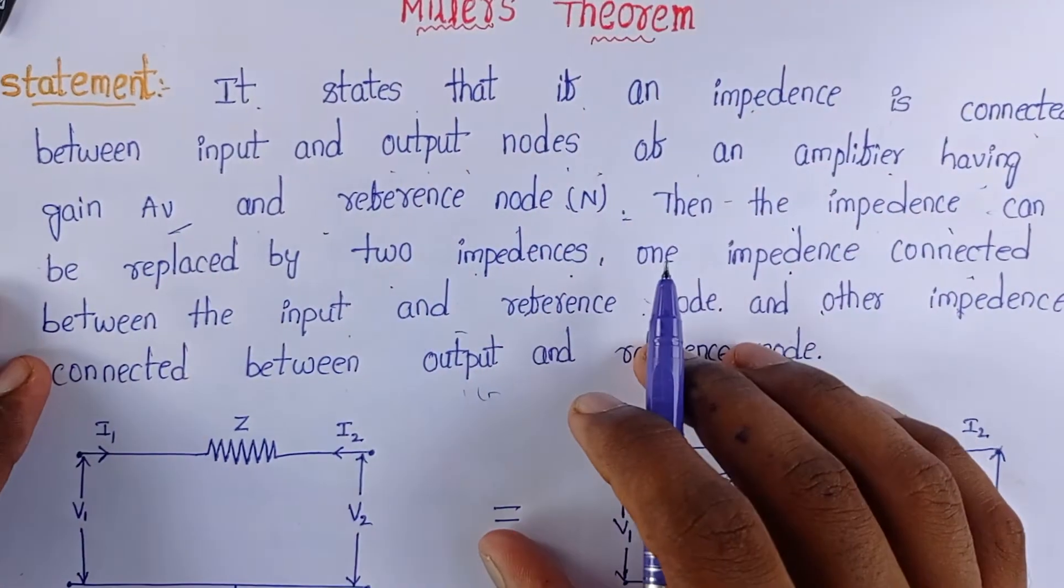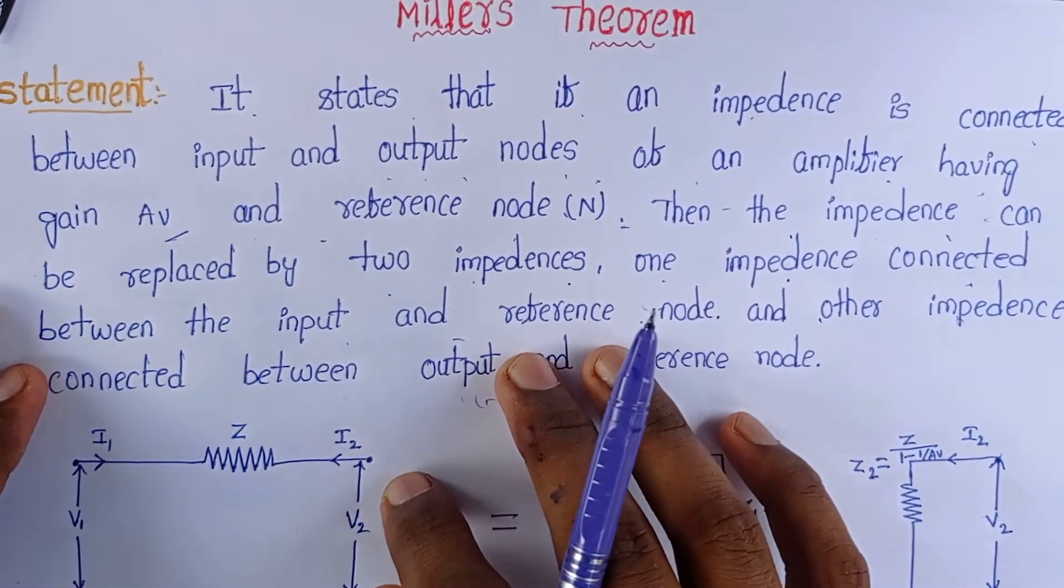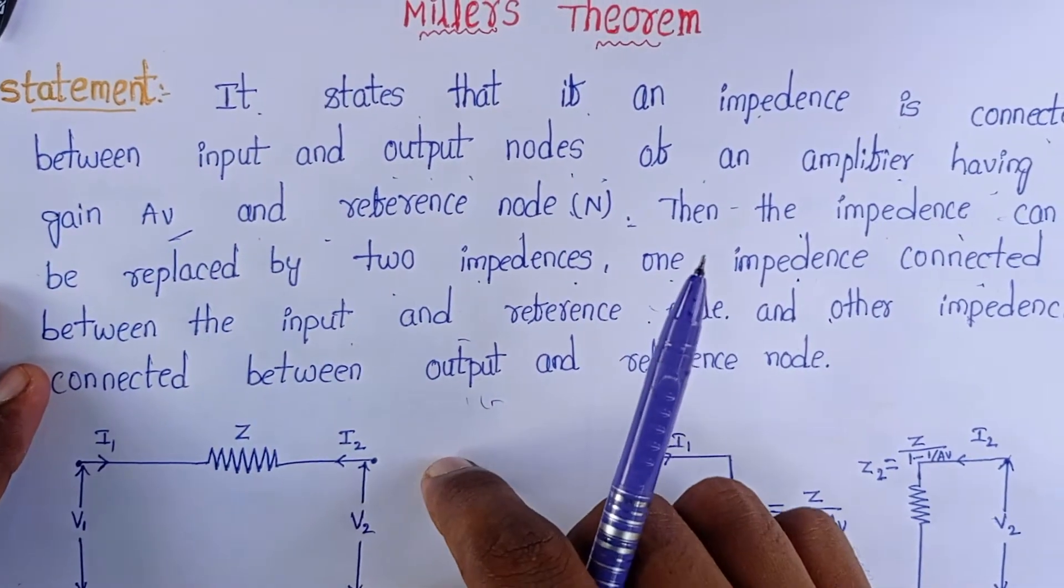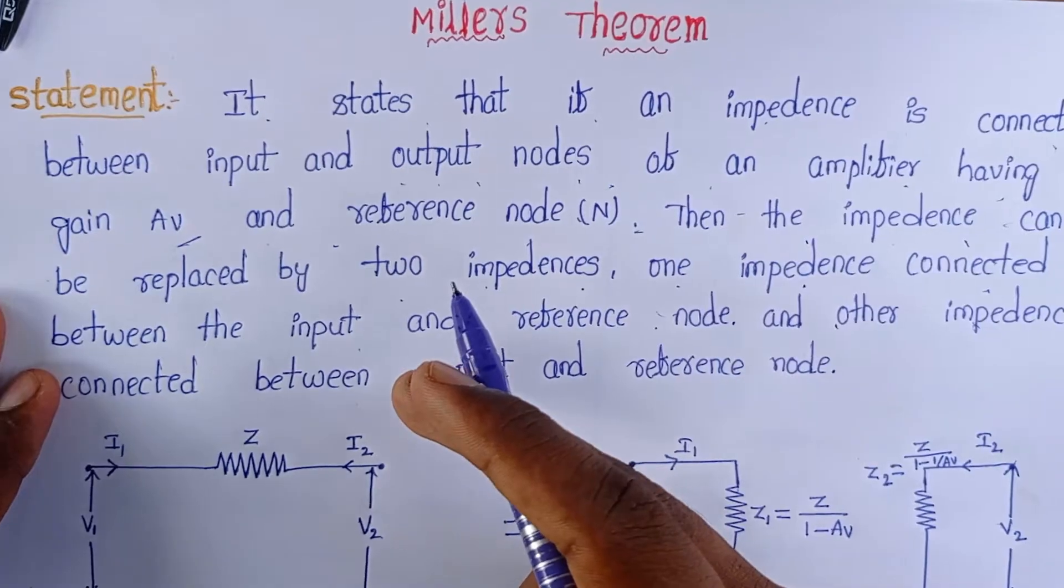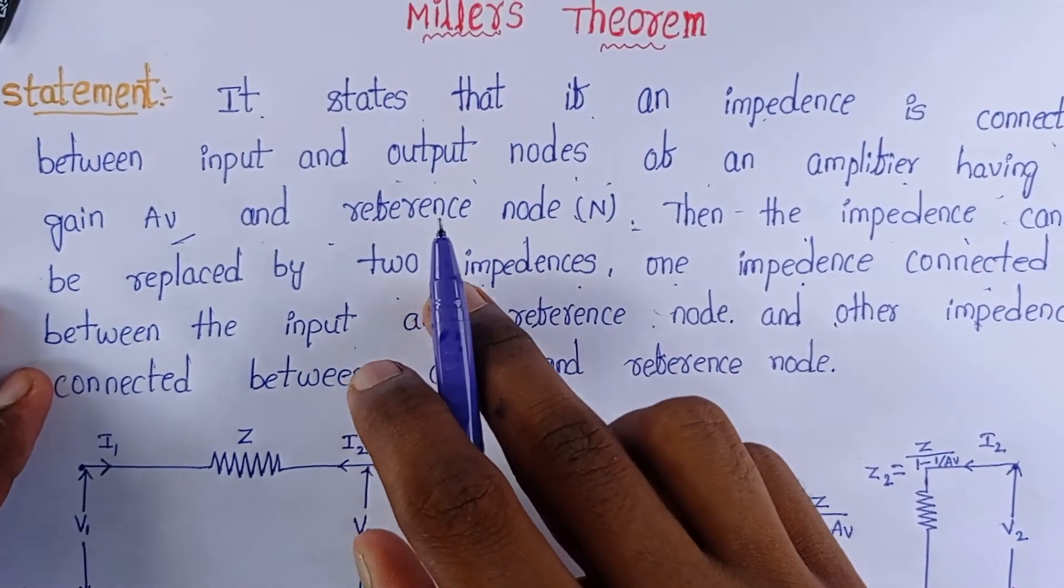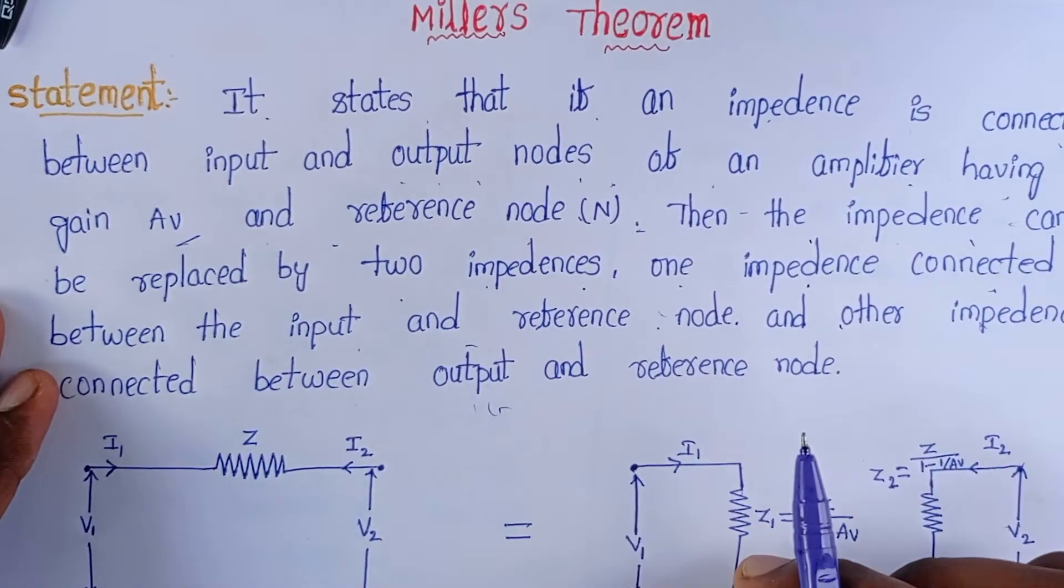This statement means if we have an impedance between two terminals, that is input and output terminals, we can simply replace that impedance into two impedances. One impedance is connected between the input and reference node and another is connected between the reference node and the output.